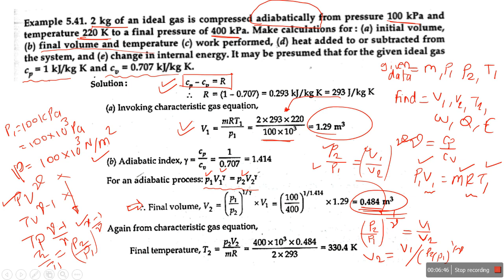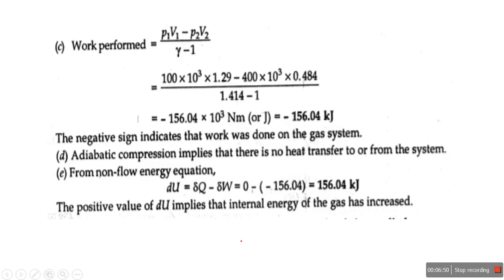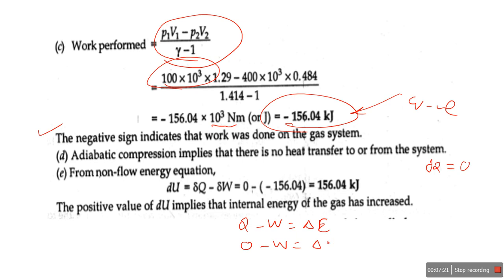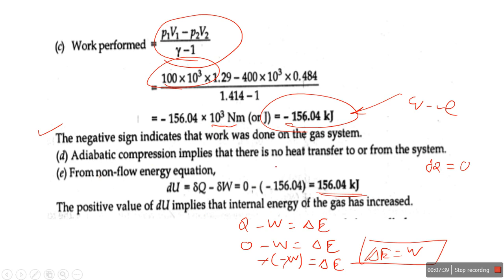Then using the characteristic gas equation again, we find the final temperature T2. For work performed, remember the formula: W = (P1V1 - P2V2) / (gamma - 1). Put the values keeping pressure in Newton per meter squared to get the answer in joules, then convert to kilojoules. The negative sign indicates work done on the system — adiabatic compression. Since it is an adiabatic process, DQ is always zero. From the first law, DQ - W = change in internal energy, so change in internal energy equals -W.